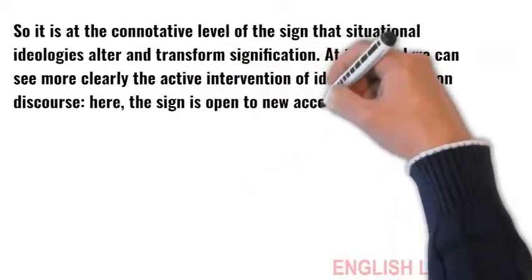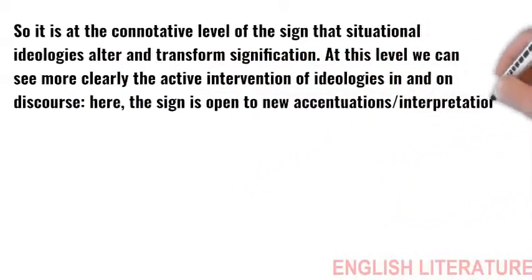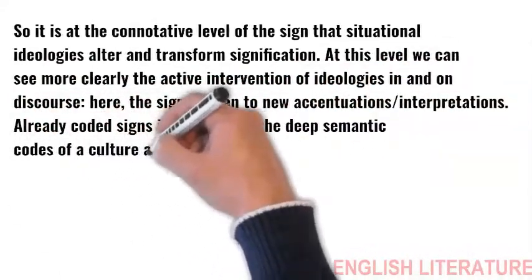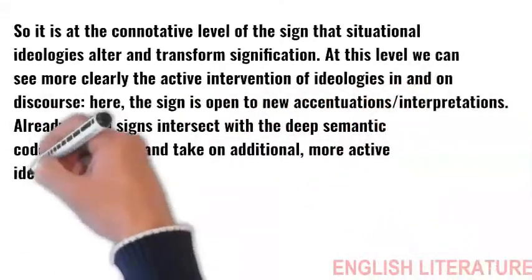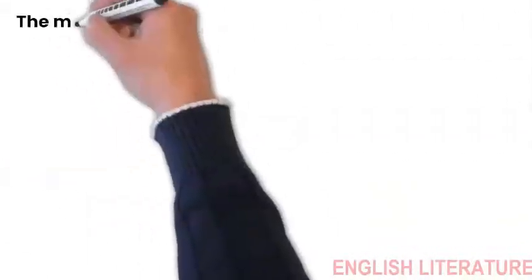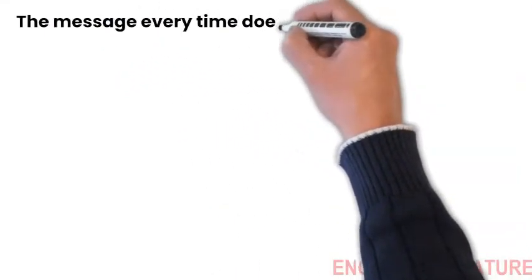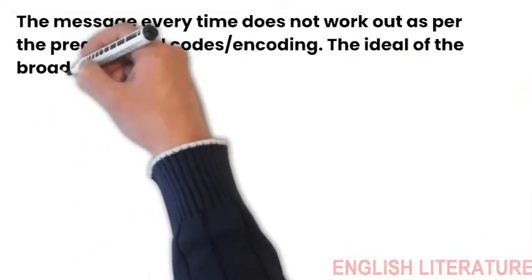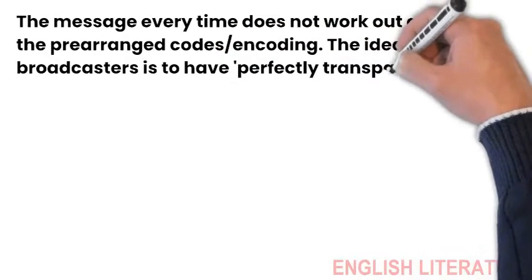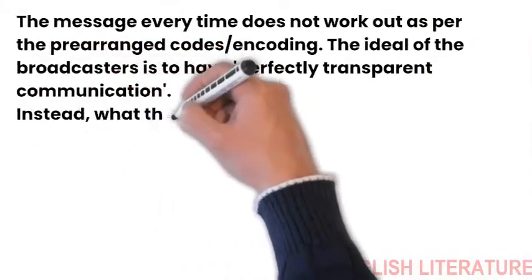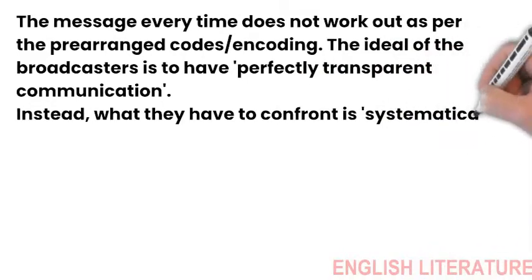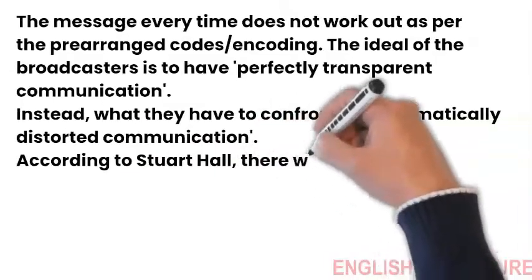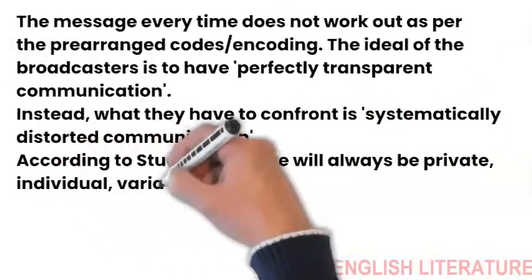Here, the sign is open to new accentuations or interpretations. Already, coded signs intersect with the deep semantic codes of a culture and take on additional, more active ideological dimensions. The message every time does not work out as per the pre-arranged codes or encoding. The ideal of the broadcasters is to have perfectly transparent communication. Instead, what they have to confront is systematically distorted communication. According to Stuart Hall, there will always be private, individual and variant readings.